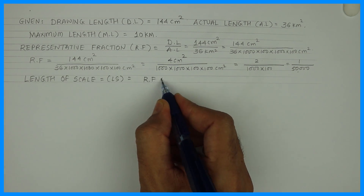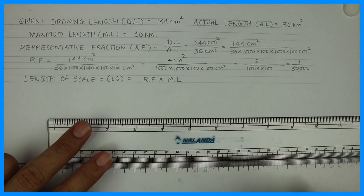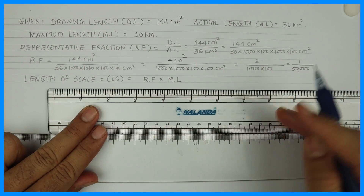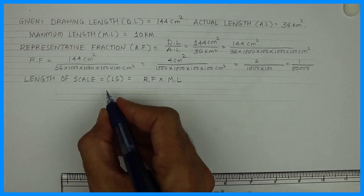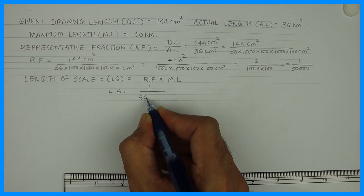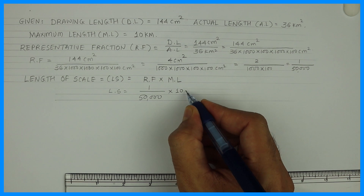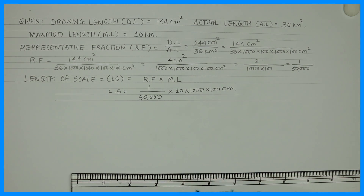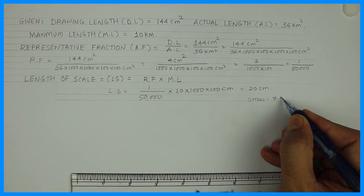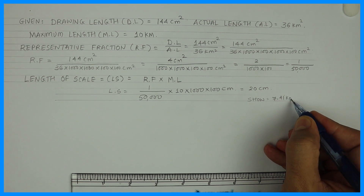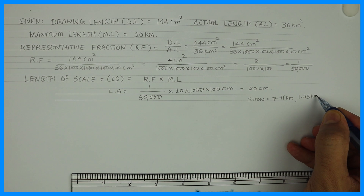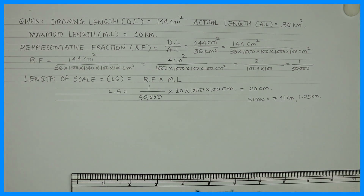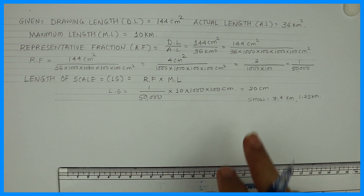Then you find out the length of scale, which is equal to RF into maximum length. So length of scale equals 1 upon 50,000 into 10 kilometers. Converting: 10 into thousand into hundred gives you centimeters. When you solve this, you get 20 centimeter. So we need to draw a 20 centimeter scale and show distances of 7.4 kilometer and 1.25 kilometer.